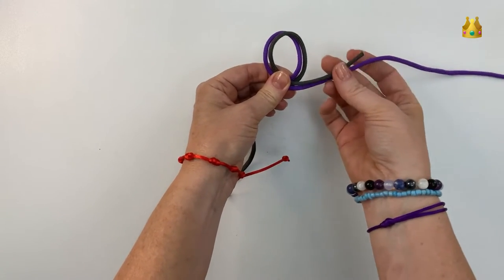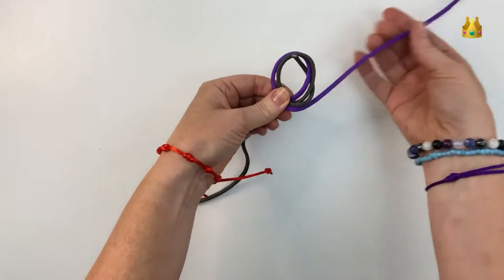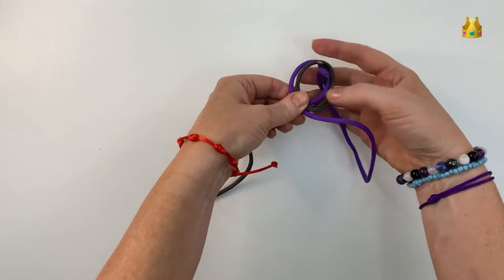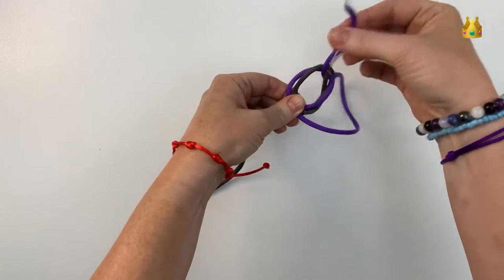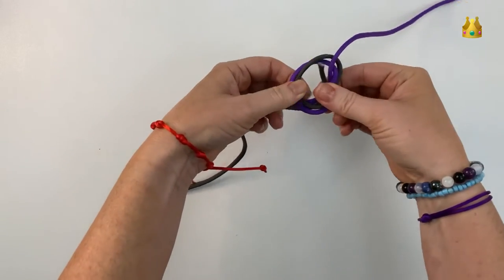Now with these right side ends we're going to bring them around and up the loop. Making sure you're bringing both cords through.